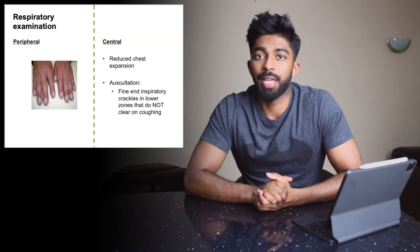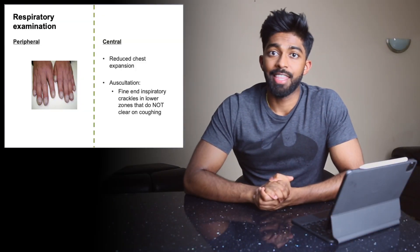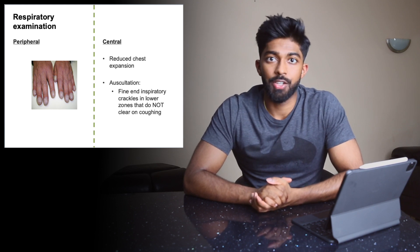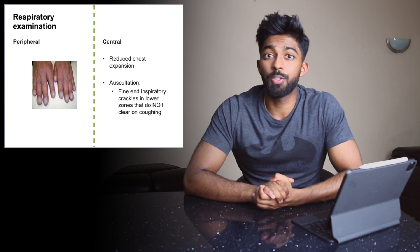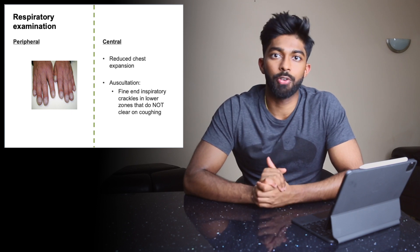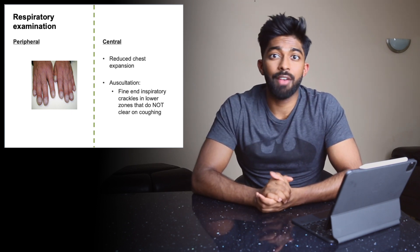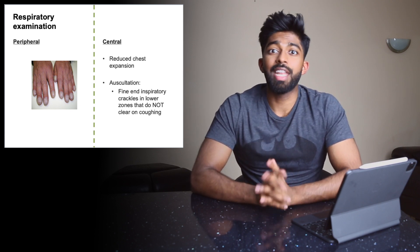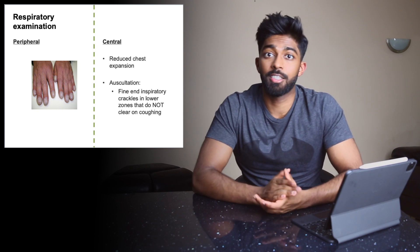So here's our respiratory station. We've read our brief and we have seven minutes to complete the examination routine. We're going along doing our examination routine and we know exactly what signs to look out for because we've used the retrospective approach. The signs that we find are: this patient has clubbing, and then moving on to the chest, there's reduced chest expansion bilaterally. On auscultation, there are bilateral fine end-inspiratory respiratory crackles that don't clear on coughing. Using the retrospective approach, we have an idea that this patient probably has pulmonary fibrosis.